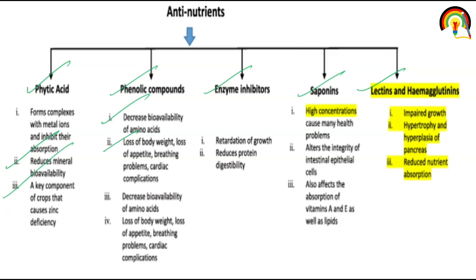Lectins and hemagglutinins cause impaired growth, hypertrophy, and hyperplasia. Hypertrophy means an increase in size — for example, the pancreas increases in size. Hyperplasia refers to an increase in the number of cells. They also reduce nutrient absorption.